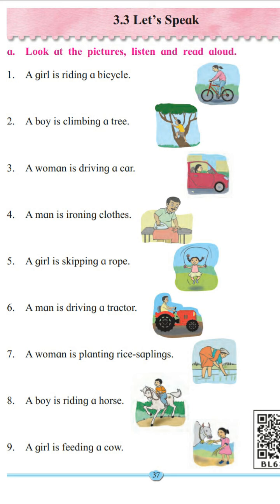Number 8. A boy is riding a horse. What is the boy doing? The boy is doing the action of riding a horse. So the action is riding, and our verb will be riding.